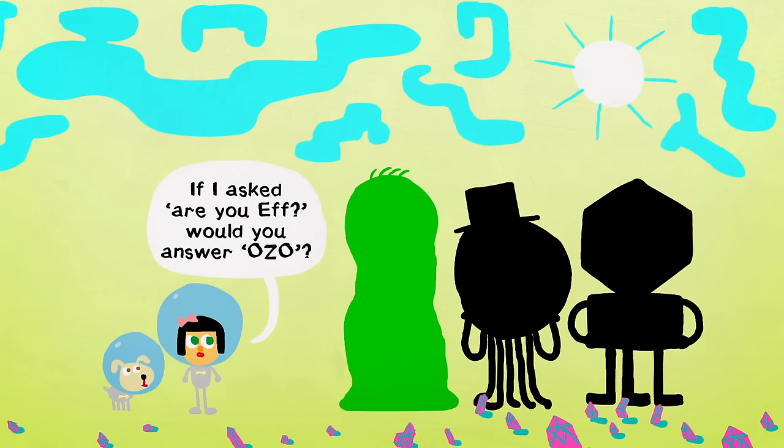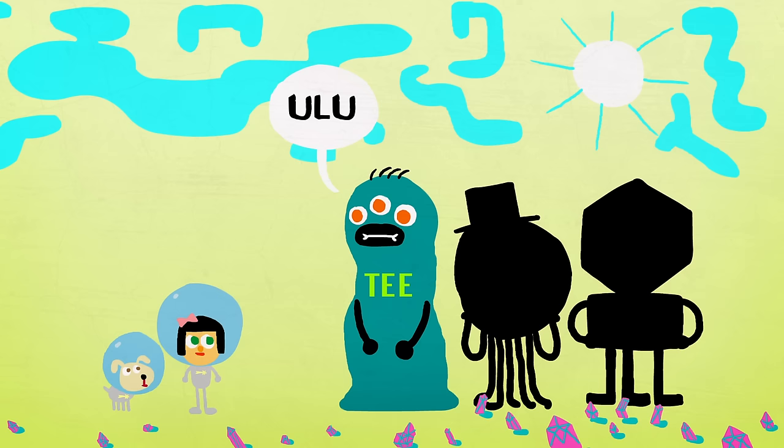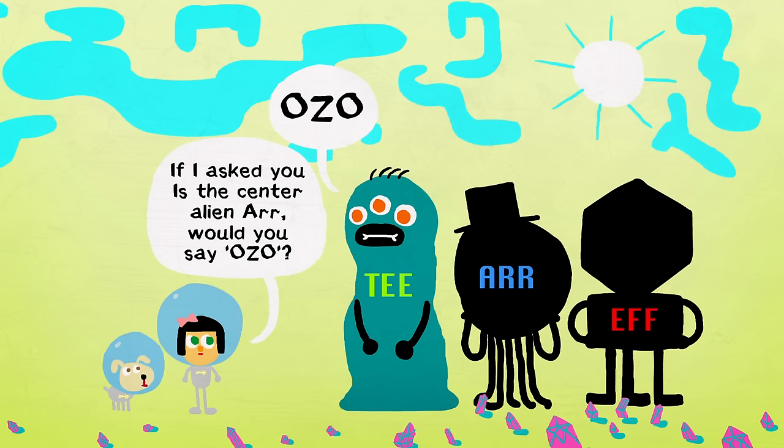Now go to the overlord you've determined isn't R, and ask, if I asked are you F, would you answer ozo? Since you don't have to worry about the random possibility, either answer will establish its identity.